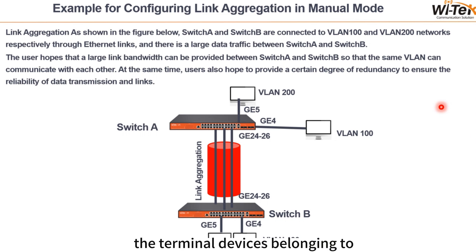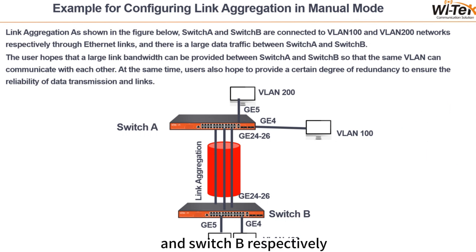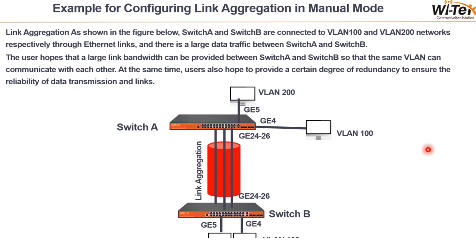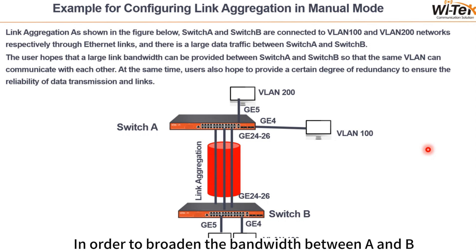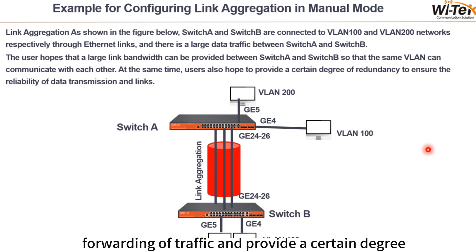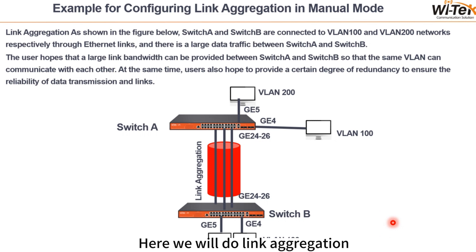We can see that terminal devices belonging to VLAN 100 and VLAN 200 are connected to the switches. This section simulates a large bandwidth scenario for departments in order to broaden the bandwidth between switch A and switch B, ensure fast forwarding of traffic, and provide a certain degree of redundancy to ensure the reliability of data transmission and links. Here we will do link aggregation between the switches.